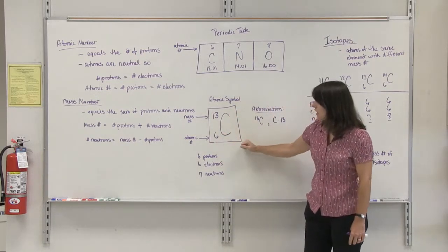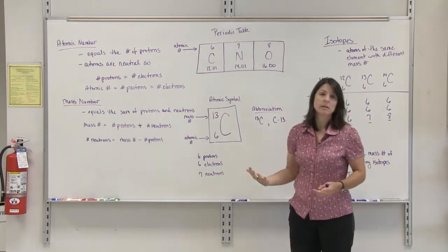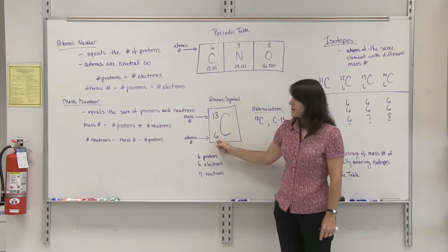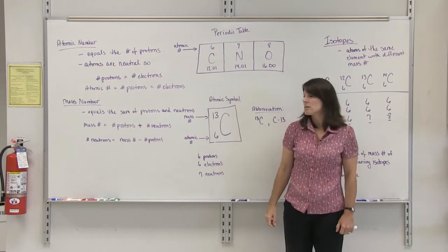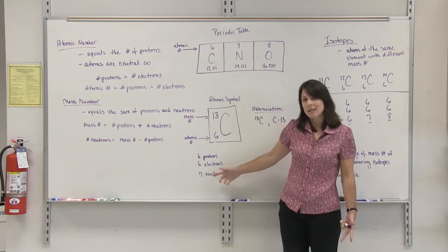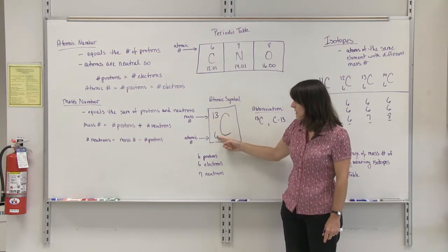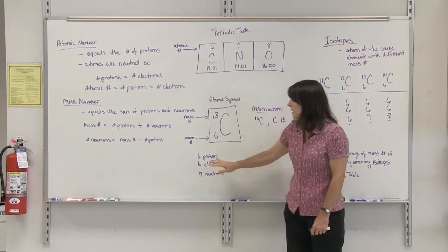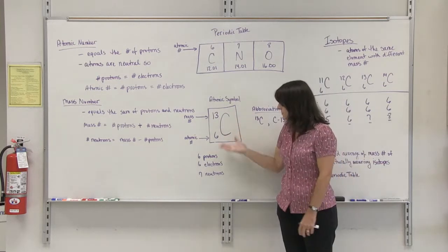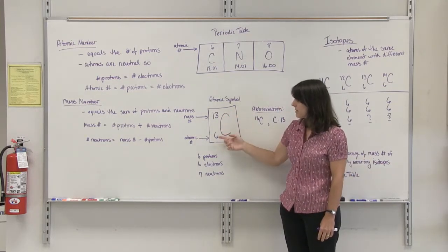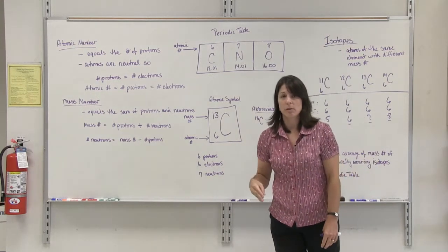So if you are given an atomic symbol, you can determine the number of protons, electrons, and neutrons in that specific atom. The atomic number represents the number of protons, so there are 6 protons. The atomic number also represents the number of electrons. The number of neutrons can be determined by subtracting the atomic number from the mass number. So 13 minus 6 gives us 7 neutrons. This is a more descriptive way to express the symbol of the element because it provides the mass number and atomic number, so you can get the numbers of all the protons, neutrons, and electrons for that specific atom.